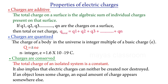Now let's talk about the basic properties of electric charges. The first property is called the additivity of electric charges. The total charge of a system can be positive or negative. If there are individual charges Q1, Q2, Q3, etc., the total charge is equal to Q1 plus Q2 plus Q3, and so on — it is the algebraic sum of all individual charges present on that surface.